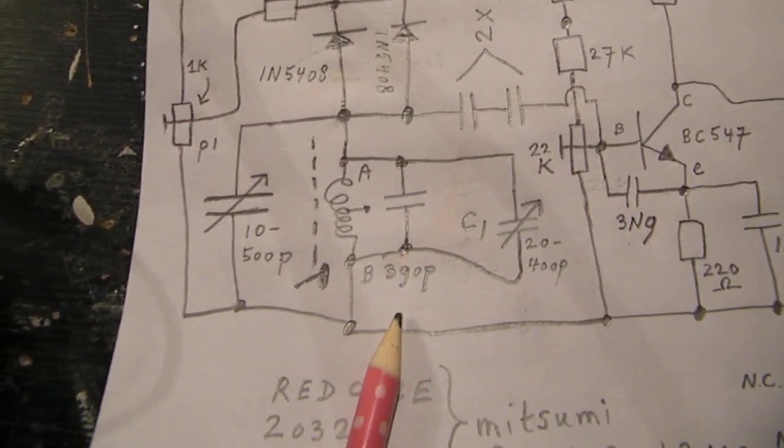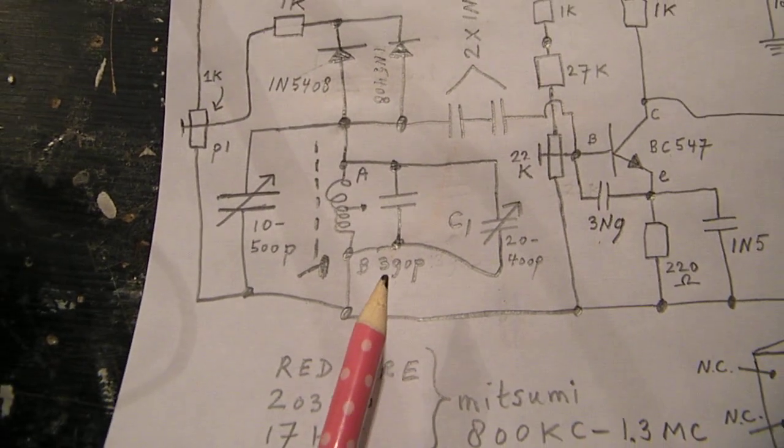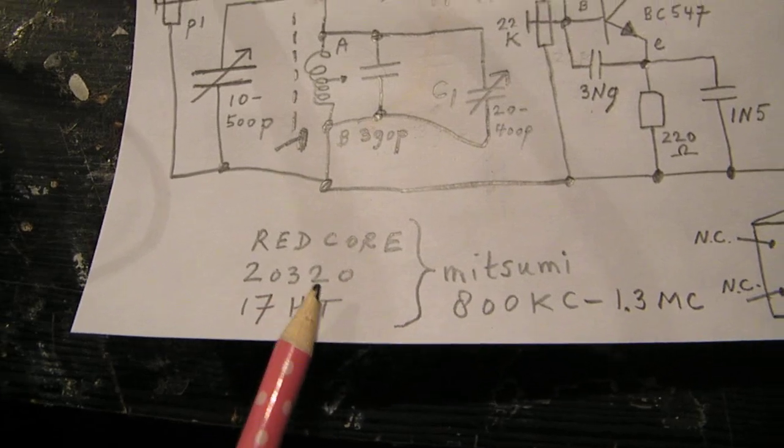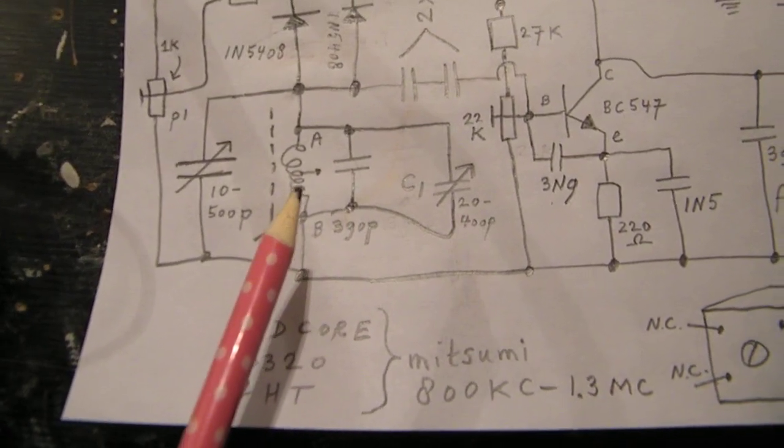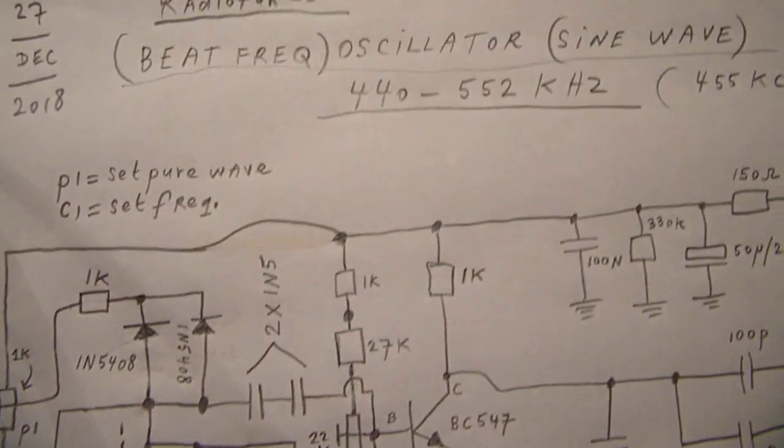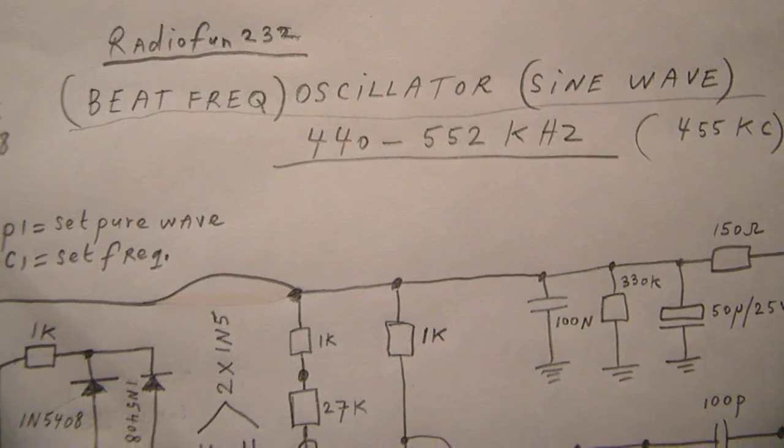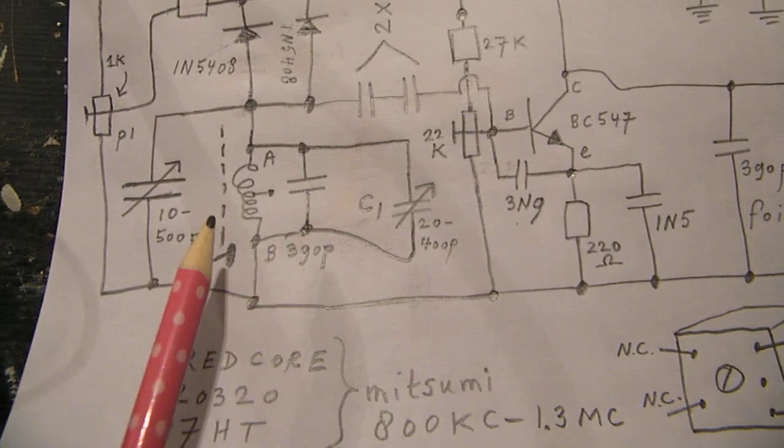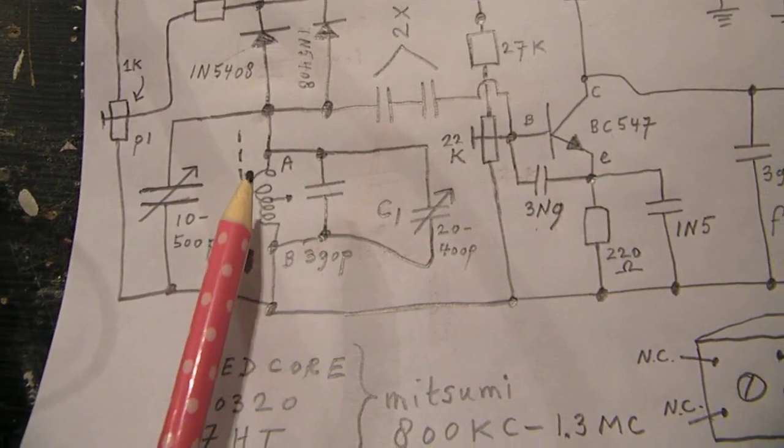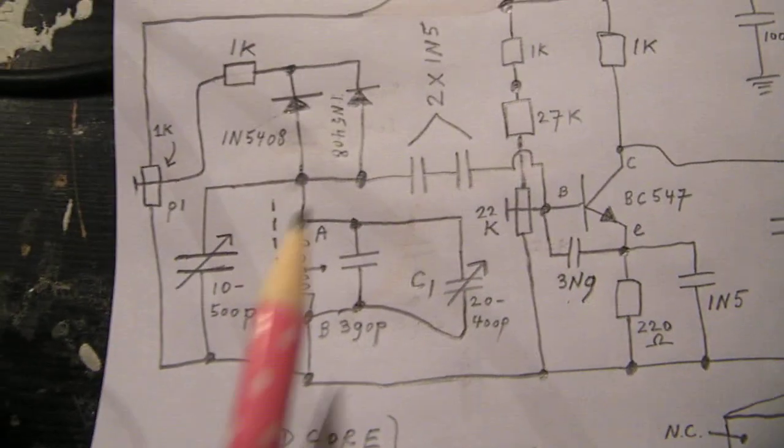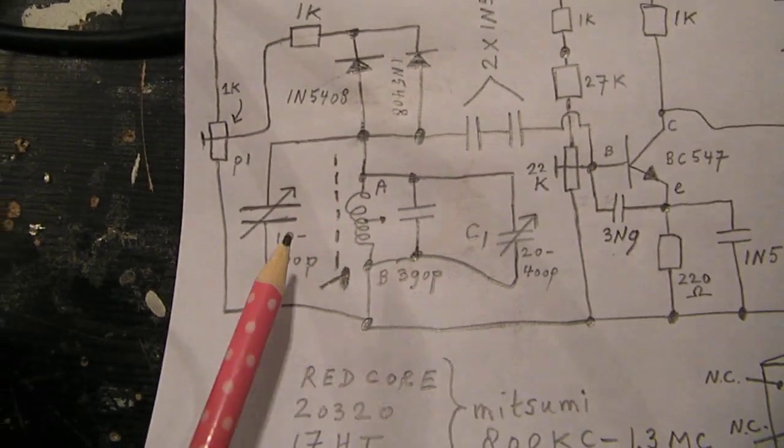With this capacitor of 390 picofarad, we bridge that coil with the red core to get the frequency down to the 440 kilohertz band, 440 and 500 kilohertz. With that capacitor you can bring the frequency down. It has a ferrite core inside that's here, so you can tune also the frequency somewhat with the help of that ferrite core.